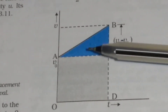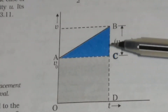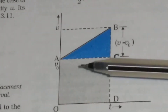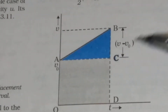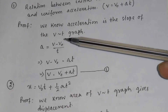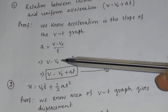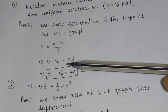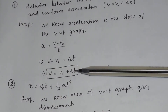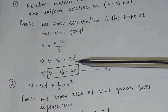So acceleration a will be equal to the slope of the straight line, that means BC divided by AC, which is equal to v minus v0 divided by t. So if a equals v minus v0 divided by t, then v minus v0 will be equal to a·t, and therefore v will be equal to v0 plus a·t. This is the first equation of motion.